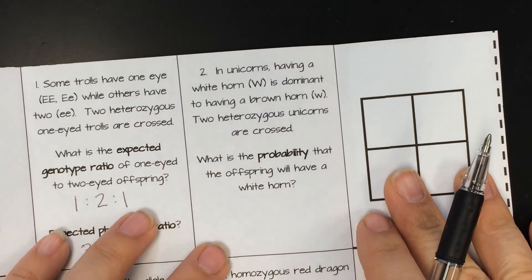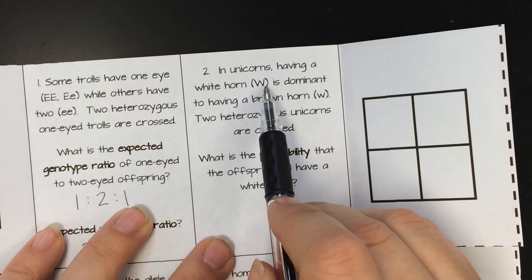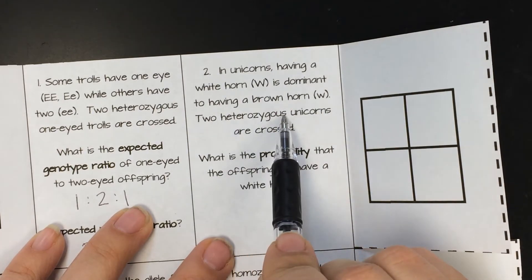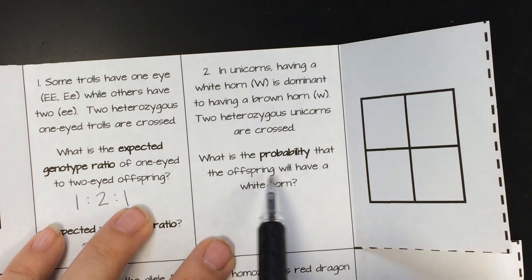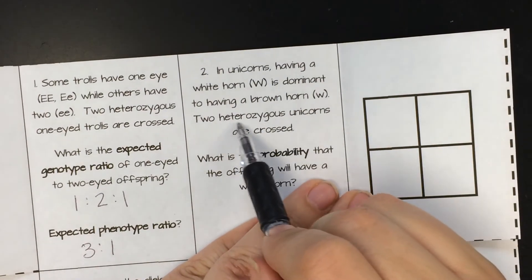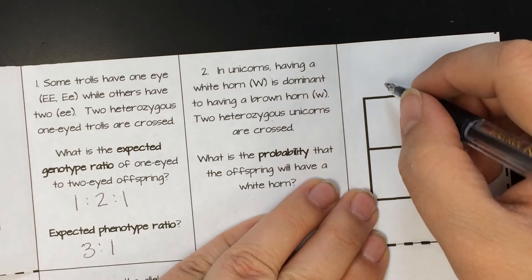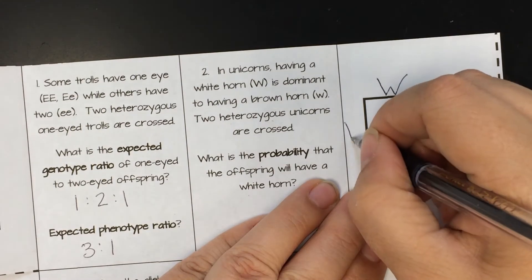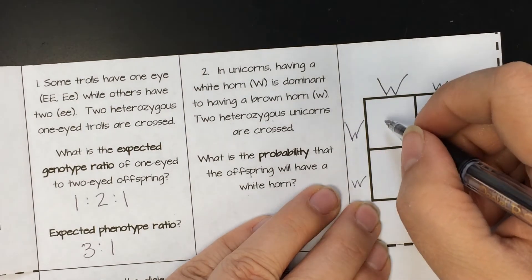Let's look at question two. In unicorns, having a white horn, big W, is dominant to having a brown horn, little w. Two heterozygous unicorns are crossed. What is the probability that the offspring will have a white horn? So they told us again that we have two heterozygous unicorns. So that means that they are going to be big W, little w, big W, little w. So again, we'll work the Punnett.